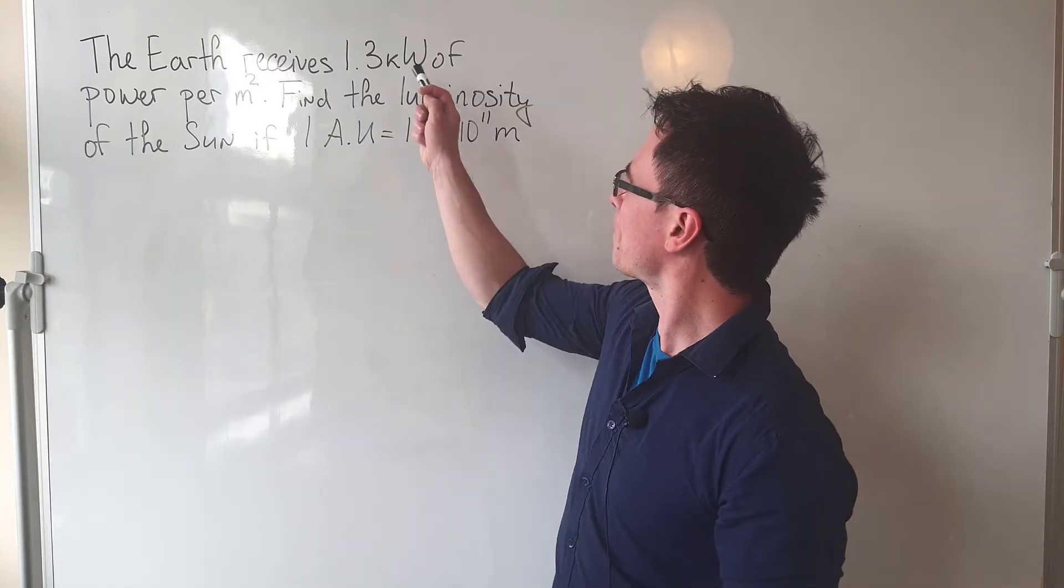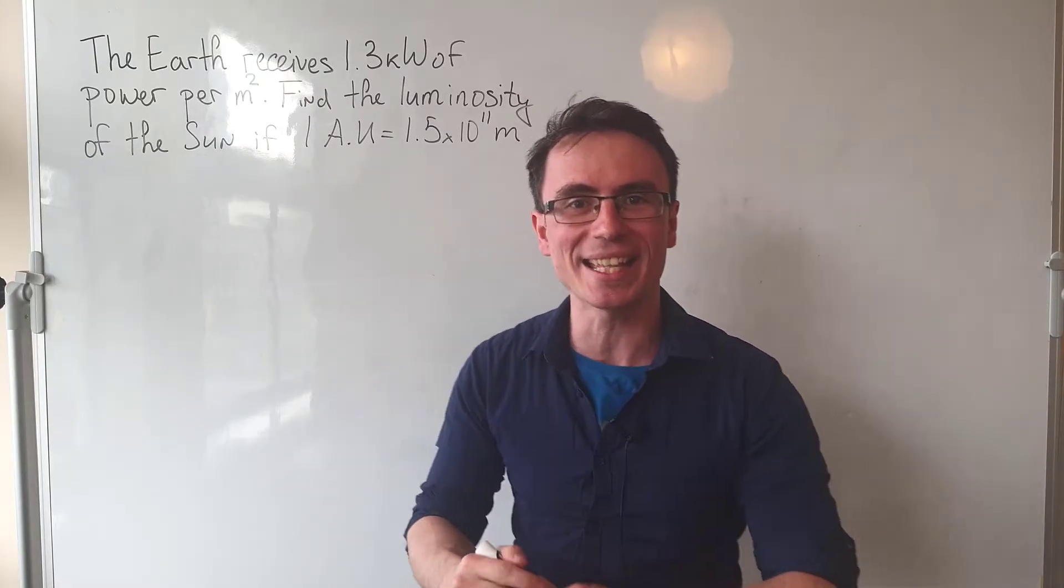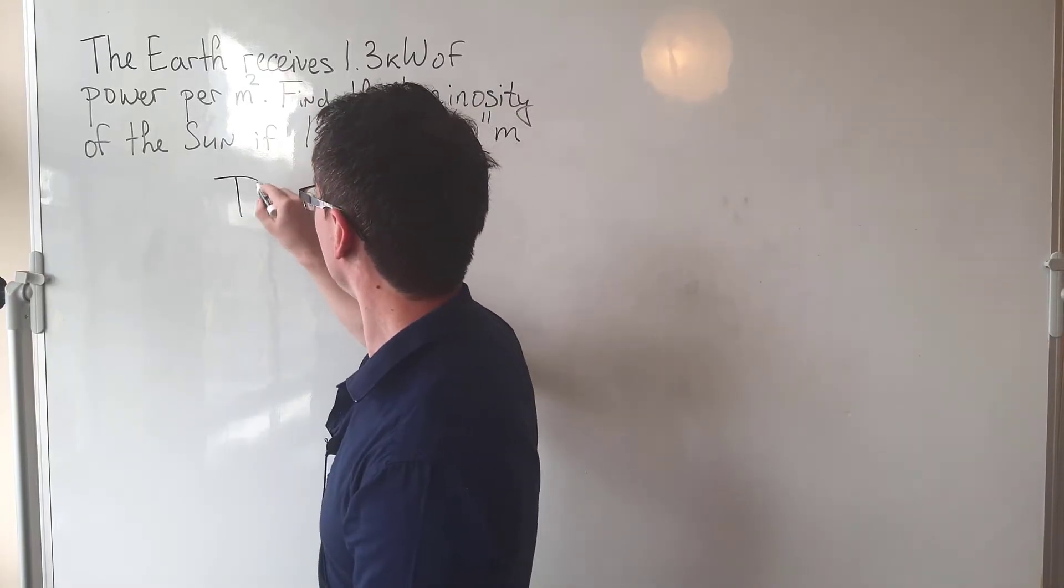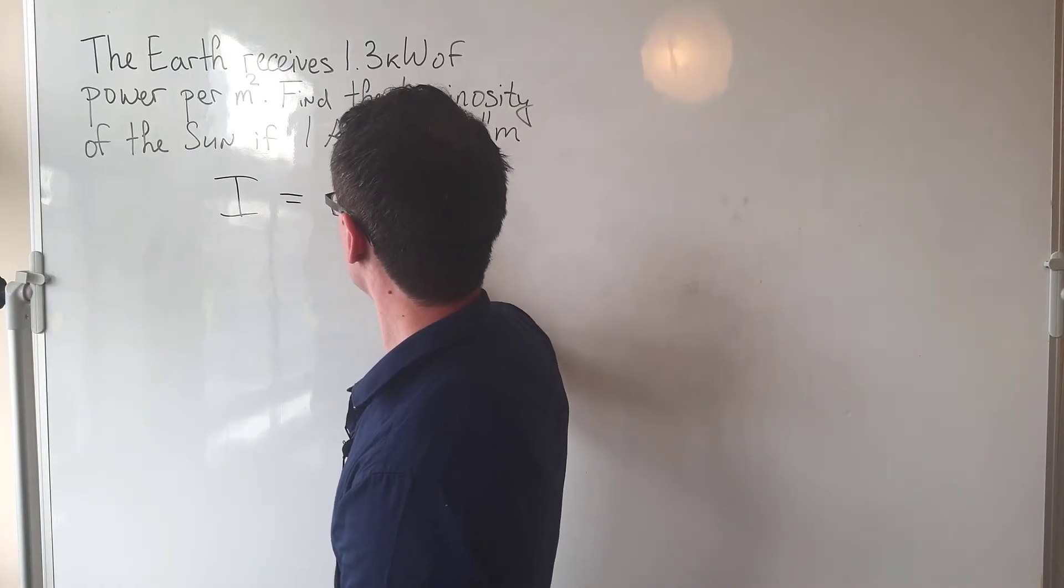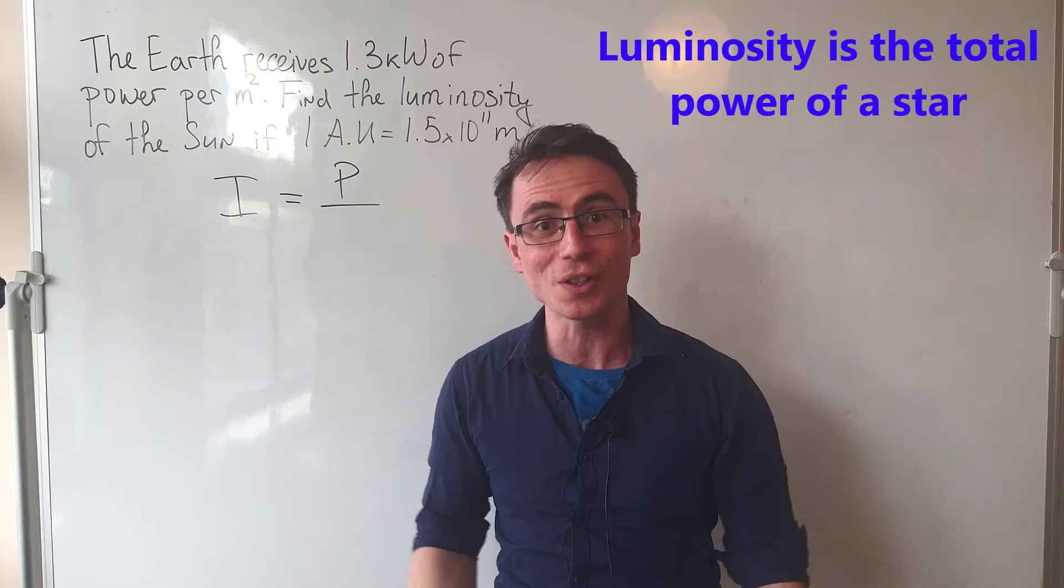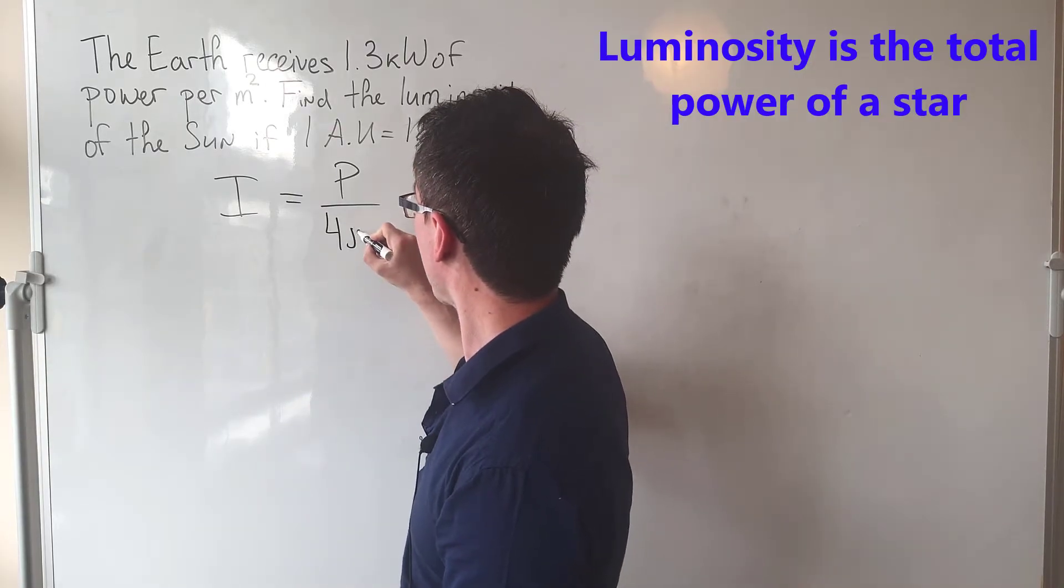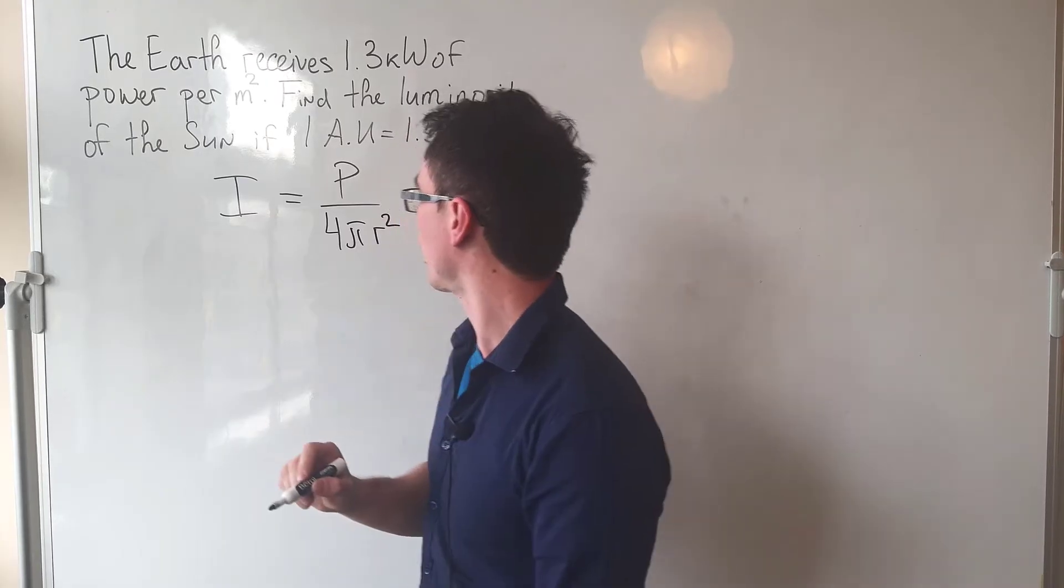But hang on a minute, we're given the power per square meter. This is essentially the intensity, so what we can use is that I is equal to the total power that's been radiated out of the star, i.e., the luminosity, over 4πr².